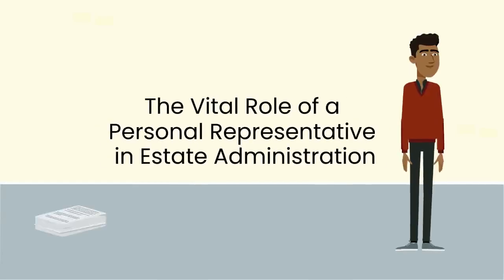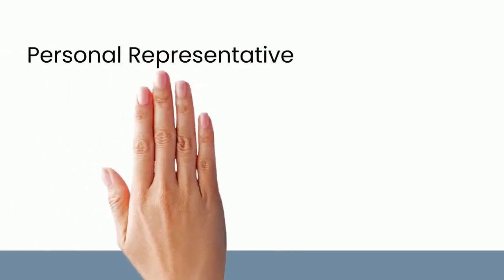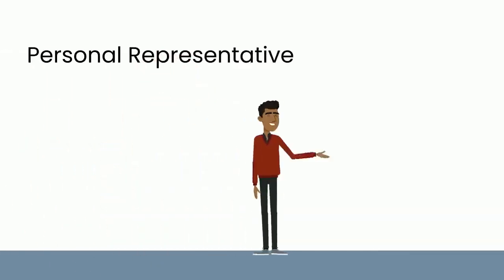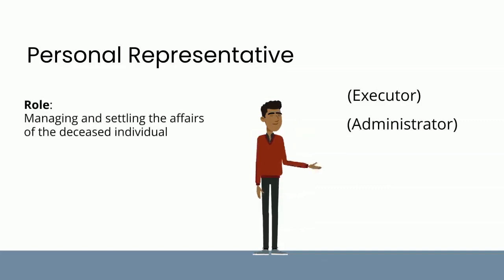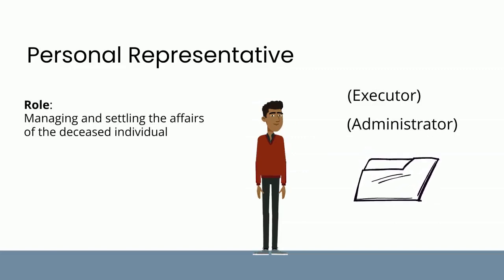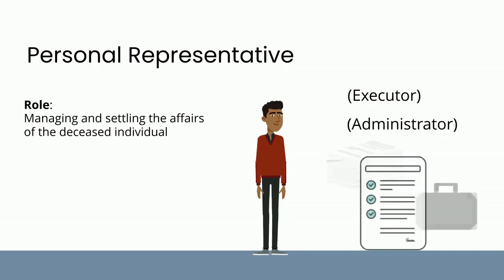When someone passes away, a personal representative, also known as an executor or administrator, assumes a critical role in managing and settling the affairs of the deceased individual. Their primary responsibility is to ensure that the estate is handled in accordance with the deceased person's wishes as outlined in their will, or as per the laws of intestate succession. Let's explore the key duties and responsibilities of a personal representative in the estate administration process.